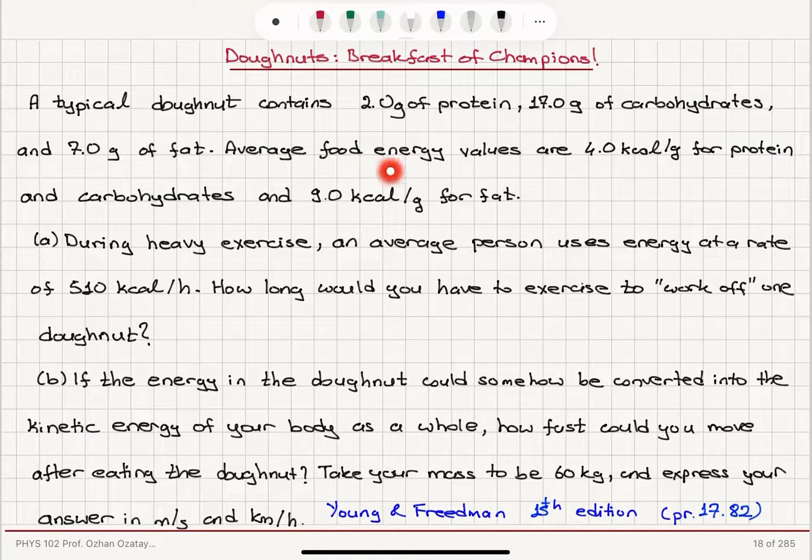And 7 grams of fat. Average food energy values are 4 kilocalories per gram for protein and carbohydrates, and 9 kilocalories per gram for fat.